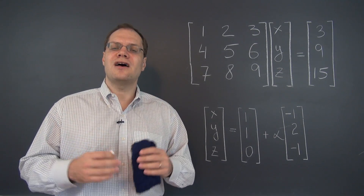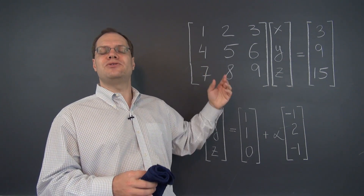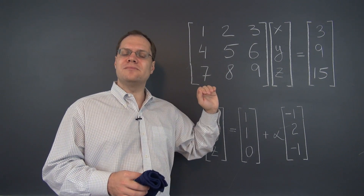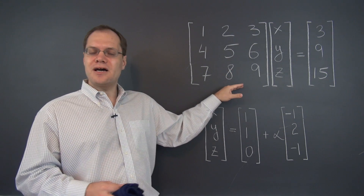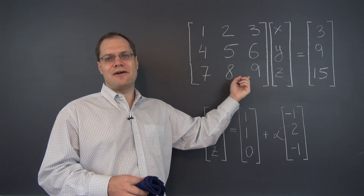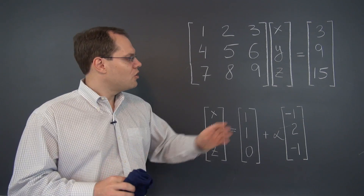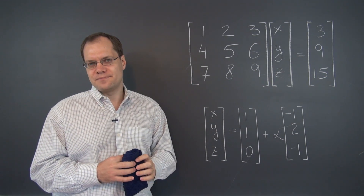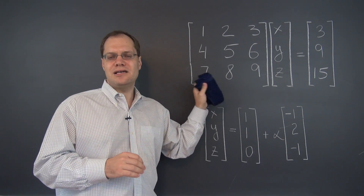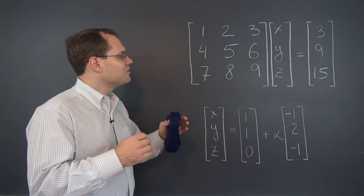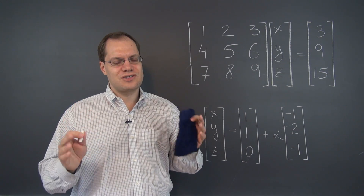So let's use those operations to our advantage and try to eliminate as many entries of this matrix as possible — in other words, turn them into zeros — so that the relationships among the columns that may not be apparent right now become apparent. We already know that the middle column is the average of the other two, but let's pretend we don't notice that, or that the right-hand side is the sum of the first two columns. That is usually the right place to stop Gaussian elimination.